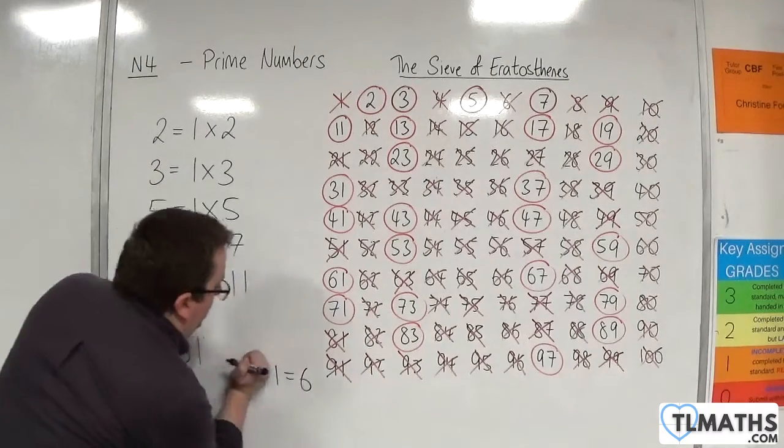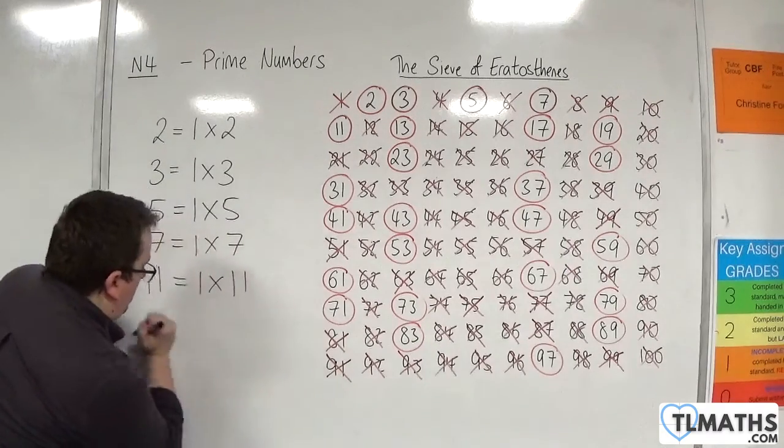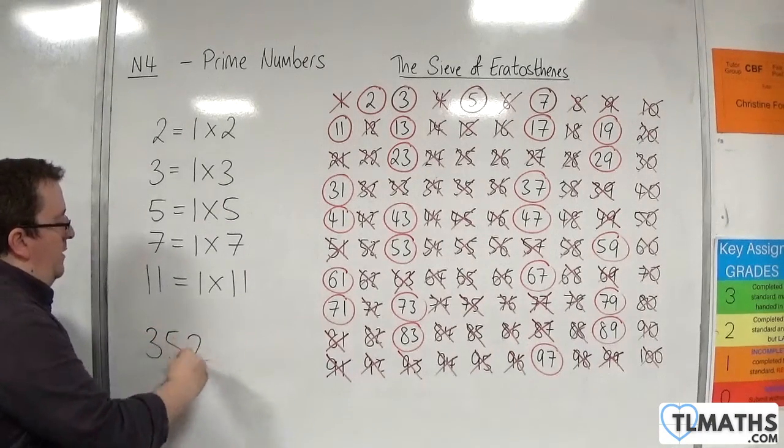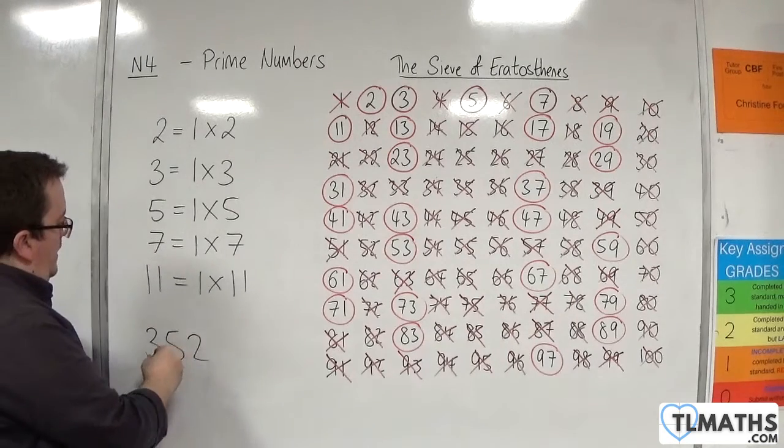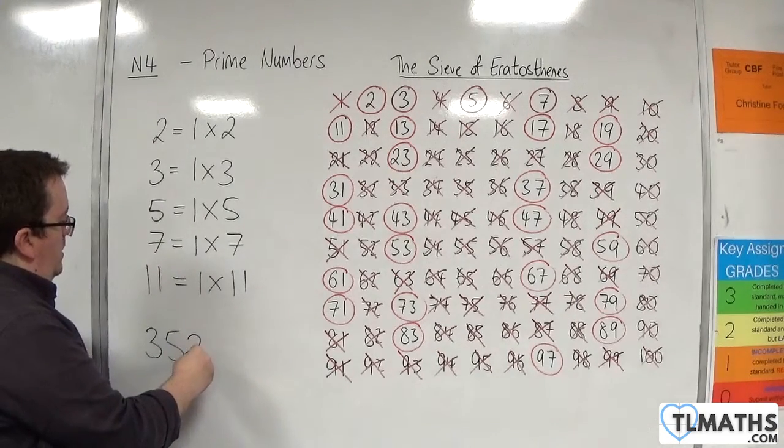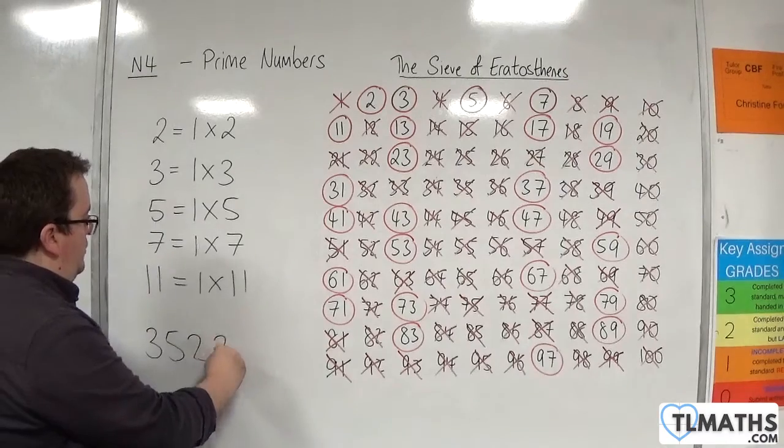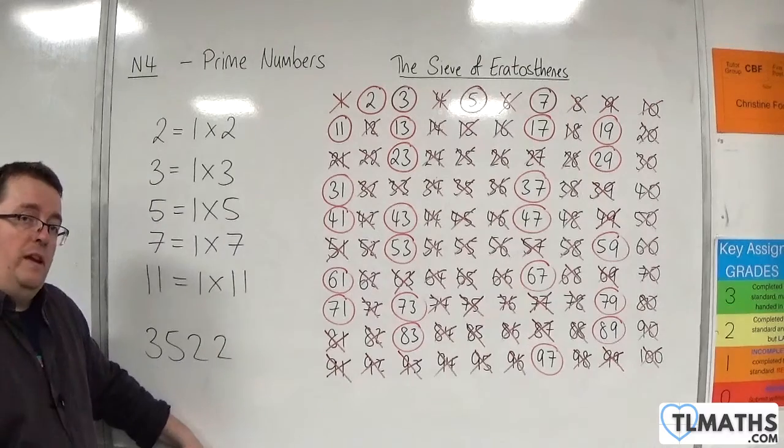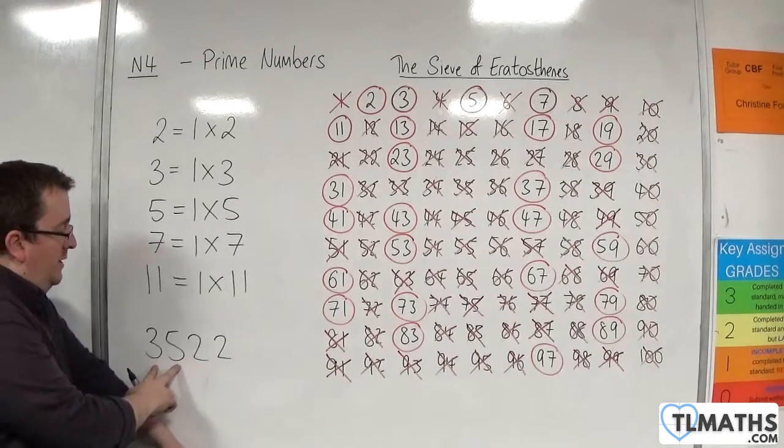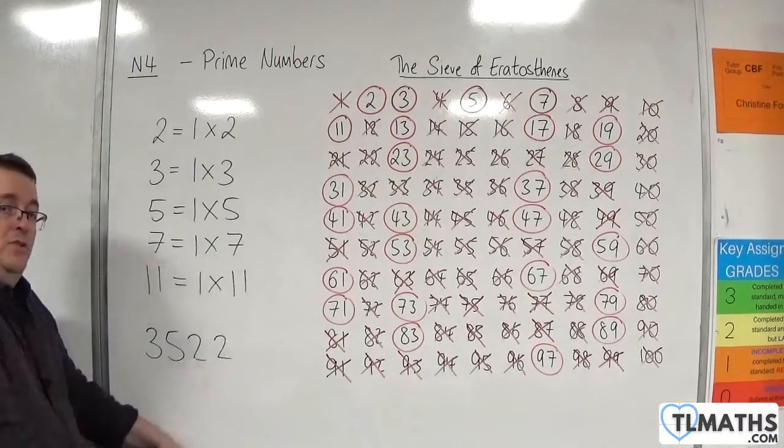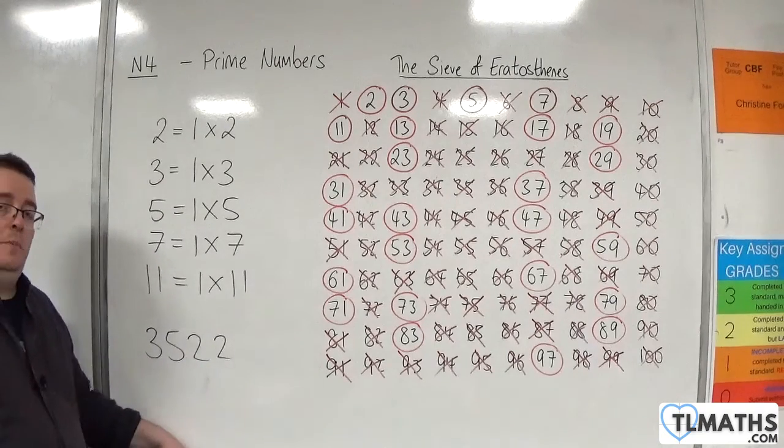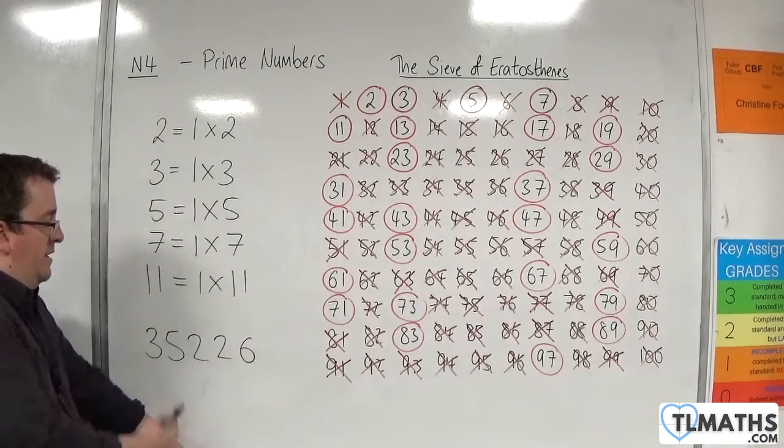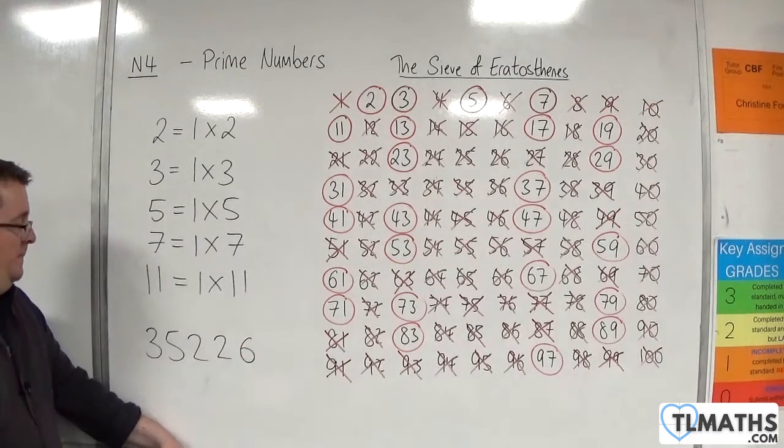So you could use that to do something like three five two two six. So that number I know is divisible by three because three plus five is eight plus two is ten plus two is twelve. Twelve is divisible by three. So I could add on a six onto the end but I know that's still divisible by three.